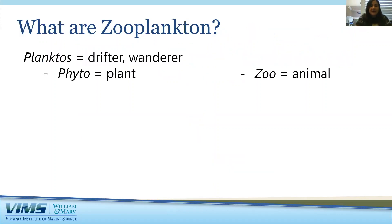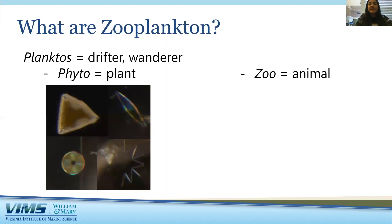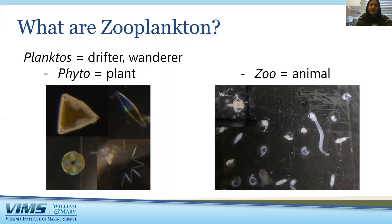The first thing we ask ourselves is: what exactly are zooplankton? Plankton comes from the Greek planktos, which means drifter or wanderer. So plankton are all the organisms who cannot swim against a current and thus drift around in the water column. You have two major types: phytoplankton and zooplankton. Phyto means plant, so just like land plants, these microscopic organisms use sunlight and carbon dioxide to create food and oxygen through photosynthesis, and they form the base of aquatic food webs. Zo means animal, so zooplankton are all the animals who drift around in the water, from microscopic animals to large animals like jellyfish.